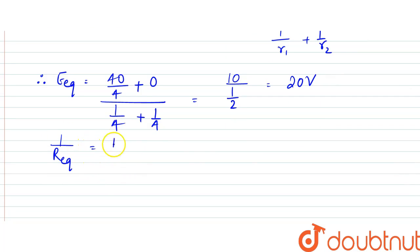So from here, let's say this is R dash. So R dash would be equal to 2 ohms.